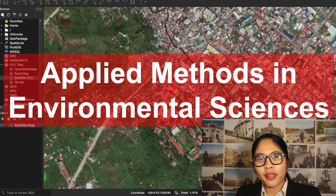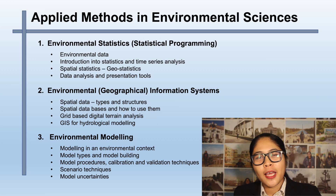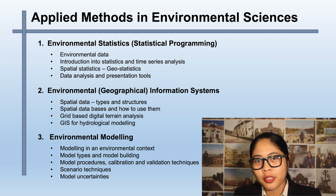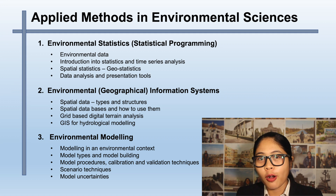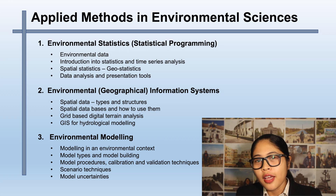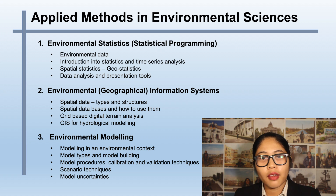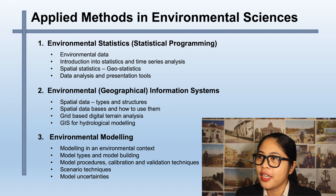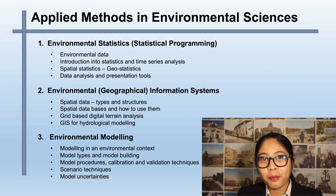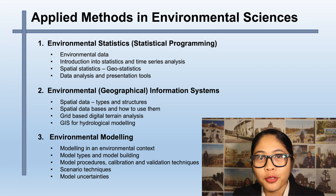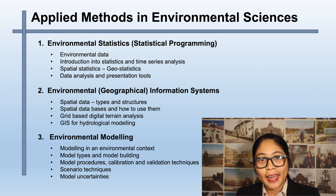Let's go to Applied Methods in Environmental Science. There are three main categories focusing on environmental modeling. First is Environmental Statistics or Statistical Programming. Second is Environmental Geographic Information Systems. Third is Environmental Modeling. These three topics have subcategories that we will hopefully discuss in our Environmental Modeling and Monitoring class.